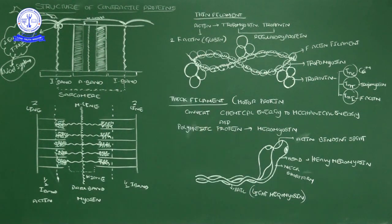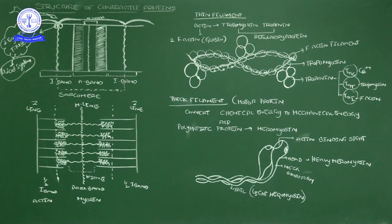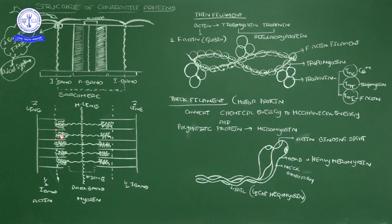Let me start today's video session. By seeing this diagram, you get some idea, because previously also I drew this one. When you take any one muscle from the bone — for example, chicken kebab — you all eat that skeletal muscle only. That skeletal muscle is made up of fascicles; inside fascicles, muscle fibers are there; inside muscle fibers, myofibrils are there.